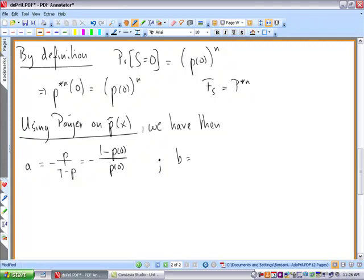And the b is m plus one times p over one minus p.